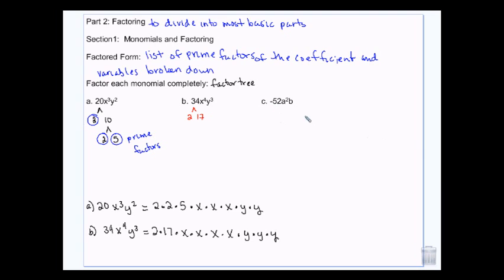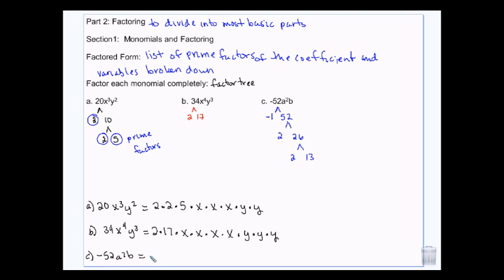Negative 52 — we're going to take into account that negative. So it's negative 1 times 52. And then we factor the 52, which is 2 times 26, which is 2 times 13, and I cannot break it down any further. So that's going to be negative 1 times 2 times 2 times 13, and then there are 2 a's and 1 b.